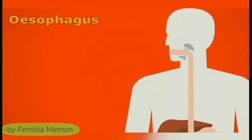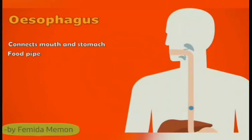Oesophagus: It is the long tubular structure connecting the mouth to the stomach and is called the food pipe. The muscles of the oesophagus start contracting and expanding; this process is called peristaltic movement, which helps move food toward the stomach. No digestion takes place here.